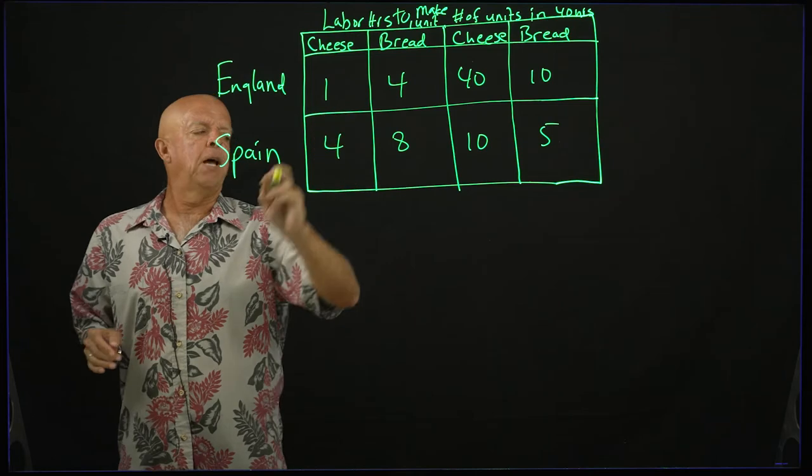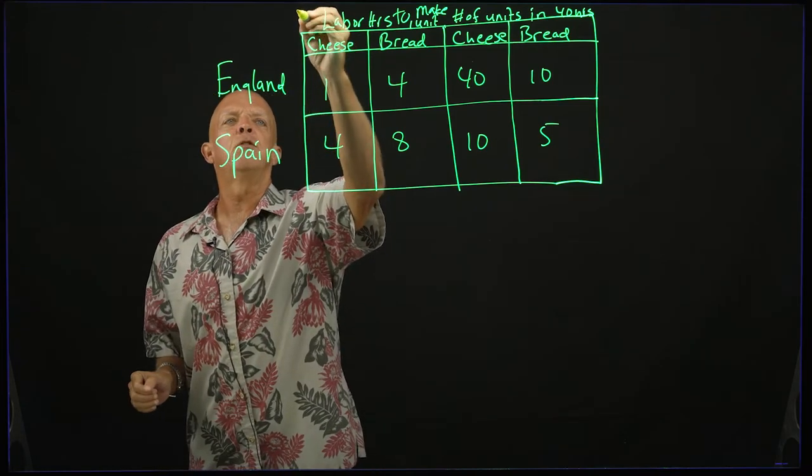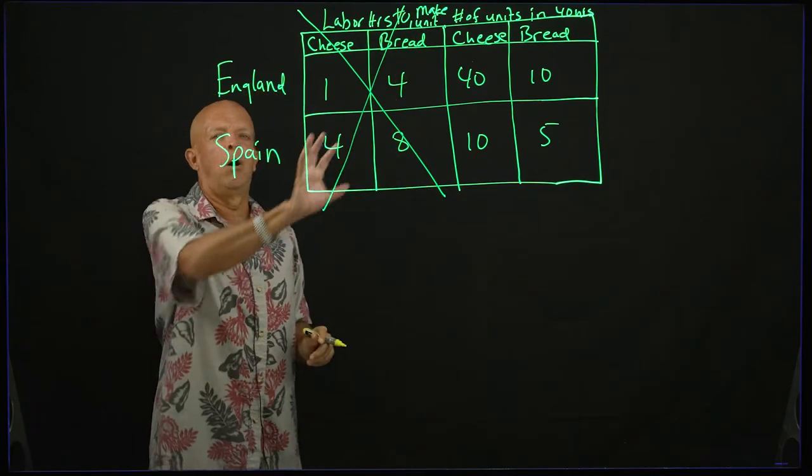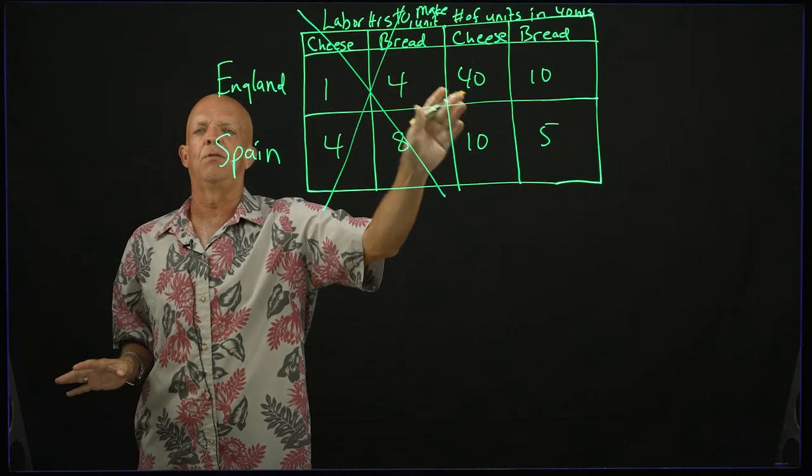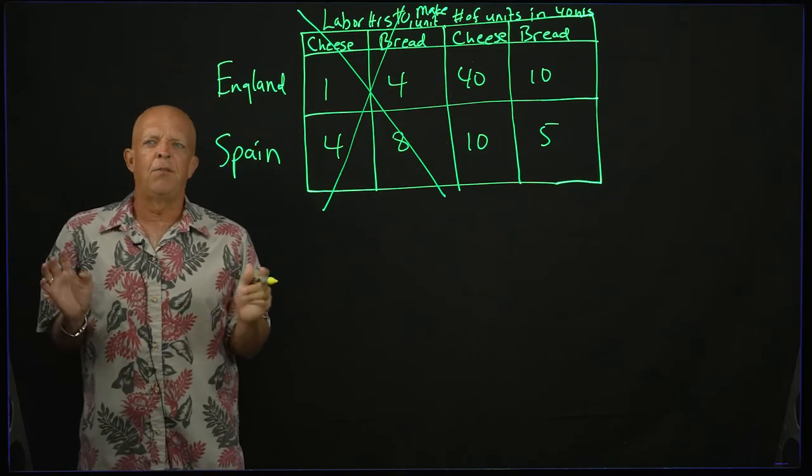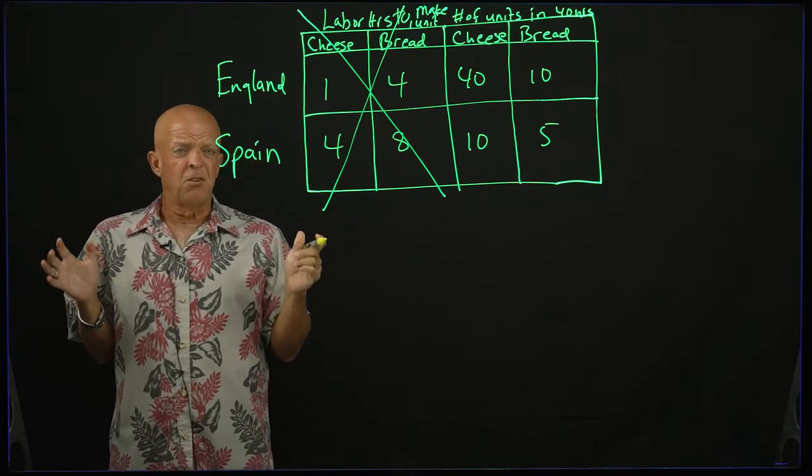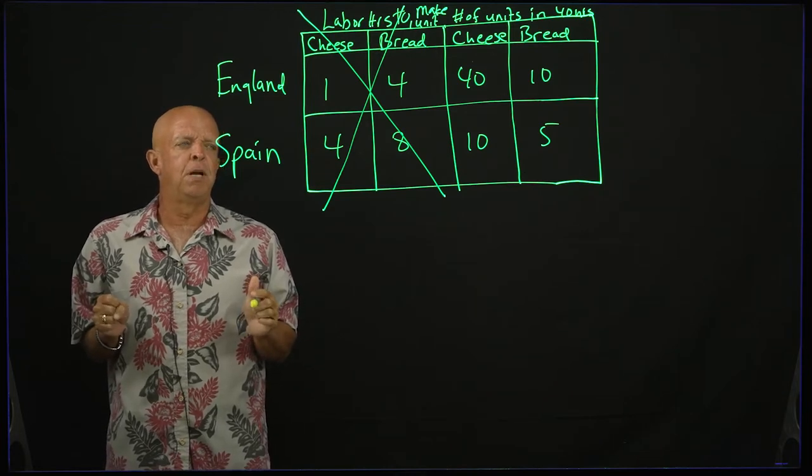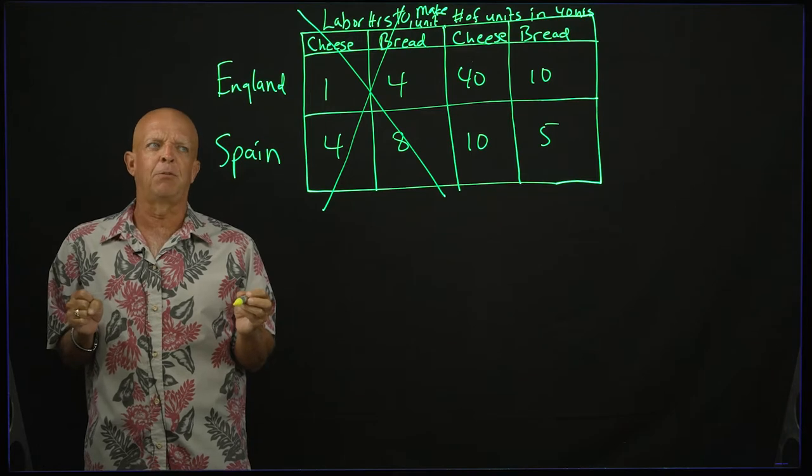Now, you'll see these labor hours, and you really don't need the labor hours, so we can just cross those puppies out. And all you need to focus on is the amount of units in 40 hours. And so oftentimes these questions will ask you, well, what should England produce and what should Spain produce?